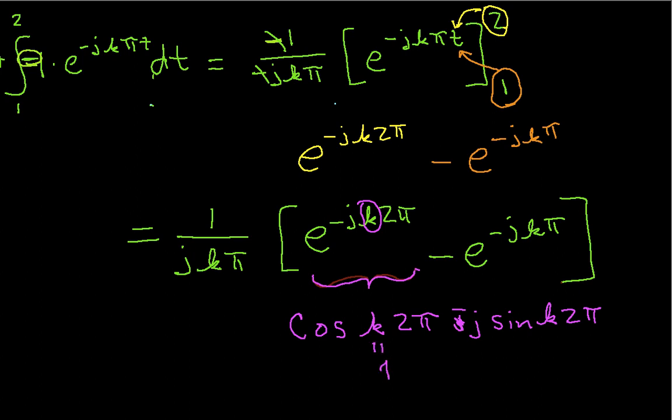And the cosine of an integer multiple of 2π is equal to 1. Similarly, I have the sine of an integer multiple of 2π, and the sine of an integer multiple of 2π is 0.